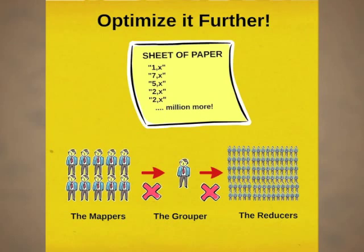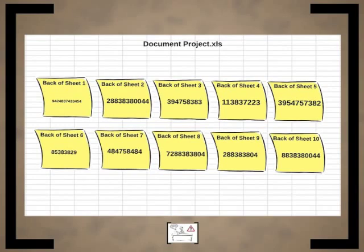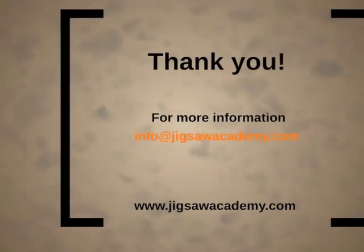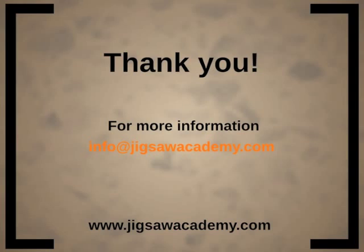Moreover, one person can sometimes do the job of a mapper and other times the job of a grouper. So you succeed in solving the biggest challenge ever posed to you. After a week, you collect the sheets from the reducers — the back of sheet one has the number of occurrences of words with one character, the back of sheet two has occurrences of words with two characters, and so on. You put this in an Excel sheet, take a printout, and give it to your CEO with a big smile. He probably says, 'Good job. I'll have a look at it — maybe next week.' Despite that, I hope this has helped you understand the bones of MapReduce and how it works.